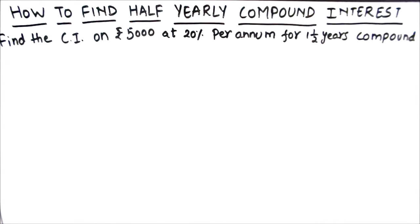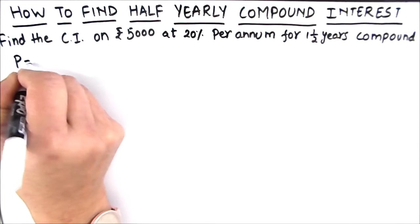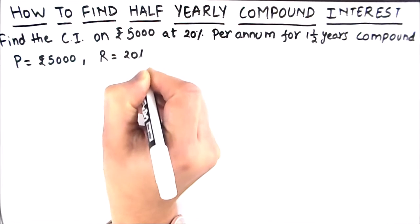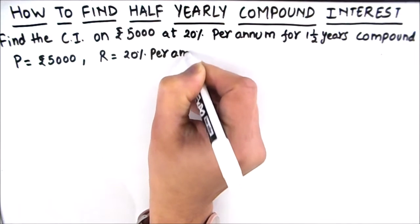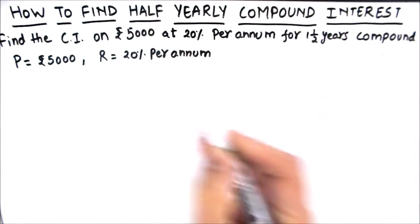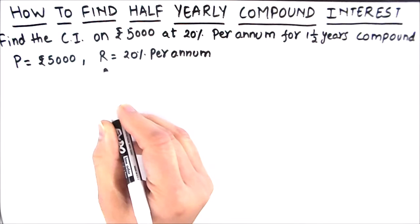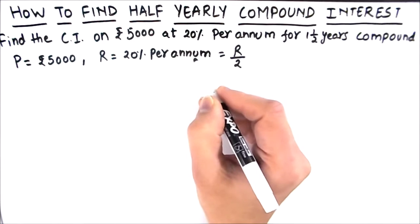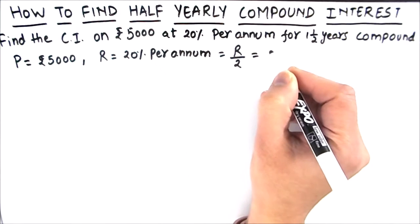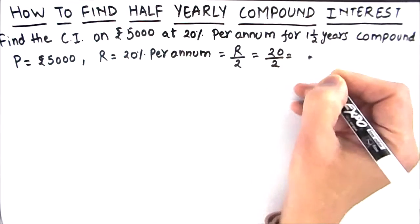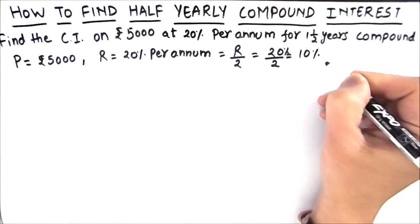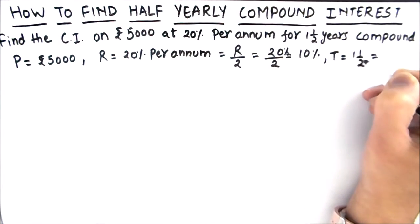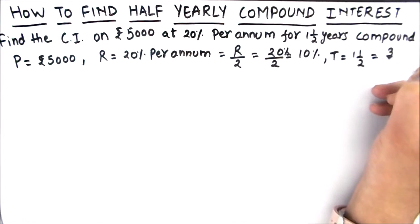First we write the given terms. Principal amount is Rs. 5,000. Rate of interest is 20% per annum. Since we have to calculate compound interest half yearly, the rate becomes r/2 per half year, which is 20/2 = 10%. Time is given as 1½ years, which we write as 3/2 years.